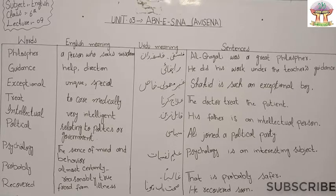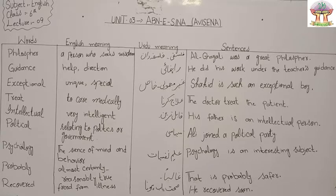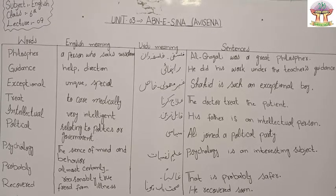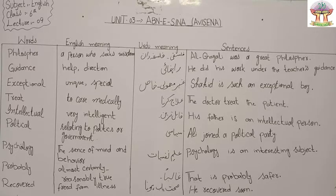In Class 6 English subject, lecture number 9, today's topic is Unit number 3, Ibn Sina. We will write English meanings, Urdu meanings, and sentences of the difficult words of this unit. Before writing the meanings and sentences of this unit number 3, you should make a title page for this unit.